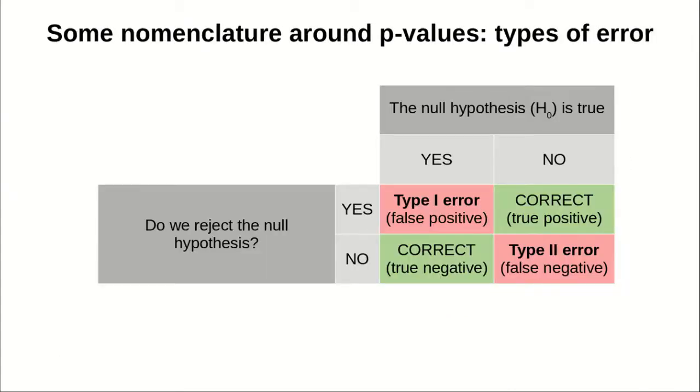Here are some nomenclature around p-values that you'll find very useful, particularly if you read statistical books. The first one is, let's suppose that you reject the null hypothesis and the null hypothesis is not correct. So you're right. This is what is called a true positive. Likewise, if you don't reject the null hypothesis and the null hypothesis is true, you're also correct. This is called a true negative.